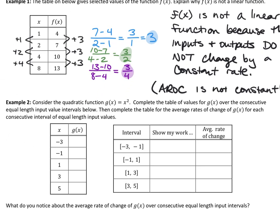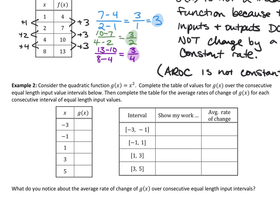Example two: consider the quadratic function g(x) = x². Complete the table of values for g(x) over consecutive equal-length input value intervals, then complete the table for the average rates of change. Literally, the first thing we need to do is use this function to fill in the chart. We should be able to do this one in our head.